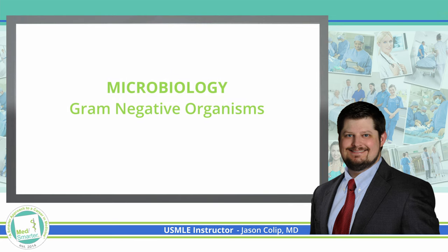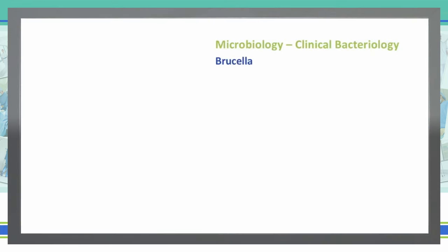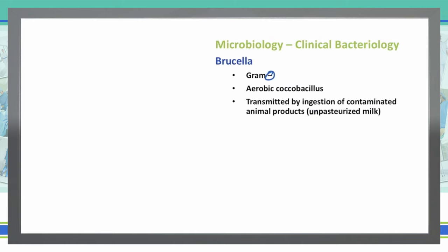Let's continue on with our discussion of gram-negative organisms, and we will now move on to Brucella. Brucella is a gram-negative aerobic coccobacillus. The way that you acquire Brucella is through ingestion of contaminated animal products — specifically, we think of unpasteurized milk when we're talking about Brucella.